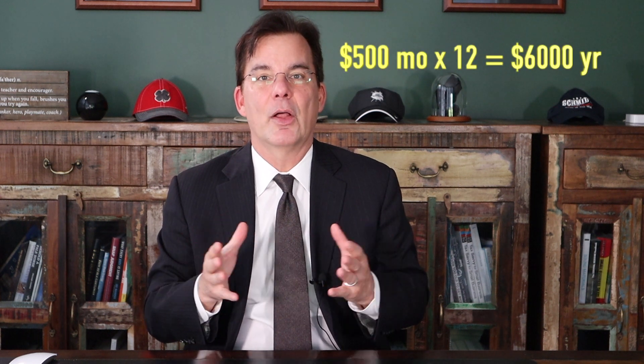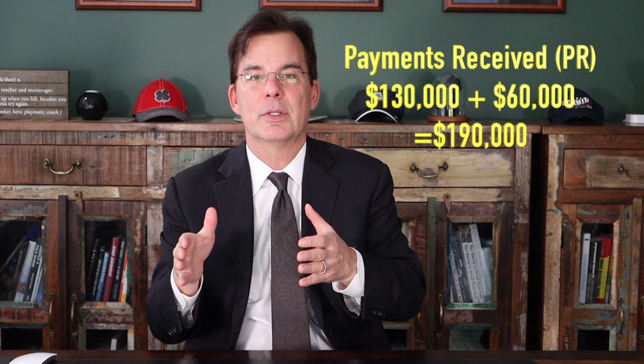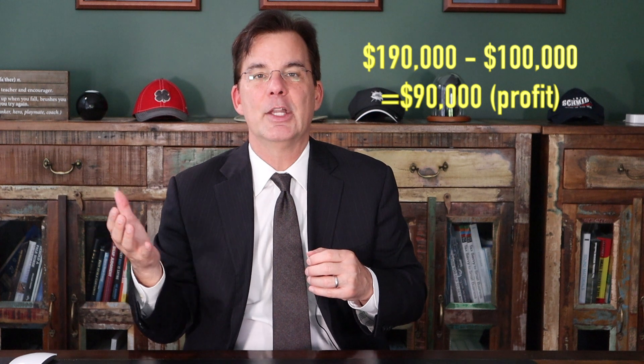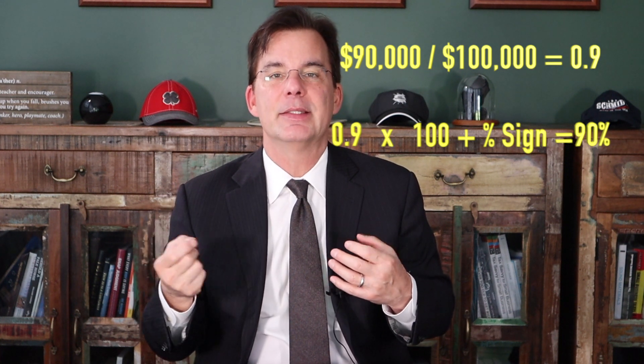But what if it's not two simple payments? What if it's rental property? Let's say you buy a rental home for $100,000 and sell it 10 years later for $130,000. Along the way, you receive net rents of $500 a month, or $6,000 a year — net of things like your mortgage payment and insurance. So $6,000 times 10 is $60,000. Your payments received total $130,000 plus $60,000, which is $190,000. Subtract your payment out of $100,000, and your profit is $90,000. Divide by $100,000 and you get 0.9 — multiply by 100 and your ROI on the property is 90%. Not bad.